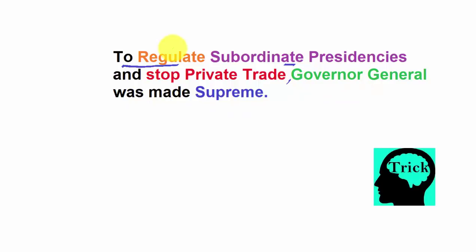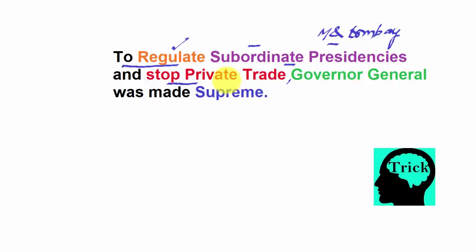From this sentence, 'regulate' helps you remember this is about the Regulating Act of 1773. The word 'subordinate' refers to the subordination of the two other presidencies — Madras and Bombay. 'Stop private trade' means the company was stopped from getting involved in any private trade and taking any bribe. 'Governor General' reminds you that the Governor of Bengal was made Governor General of Bengal, and 'supreme' refers to the Supreme Court established in Calcutta.